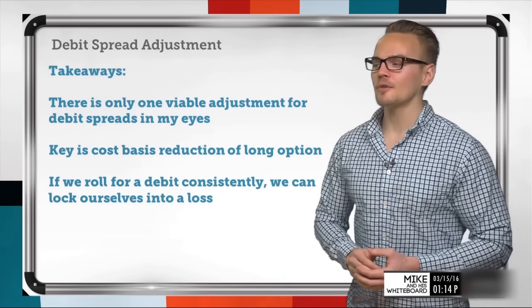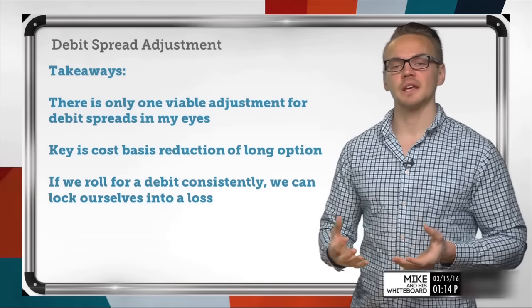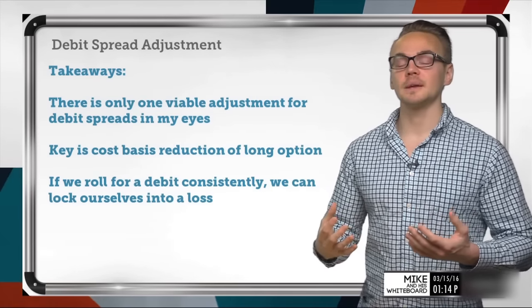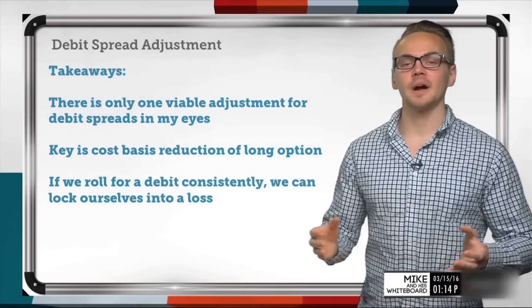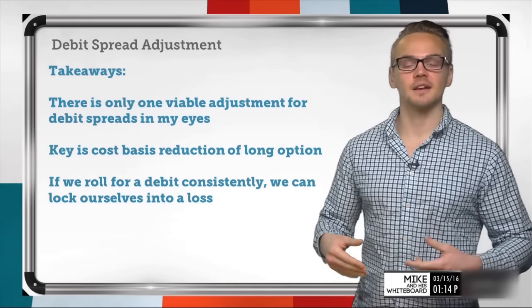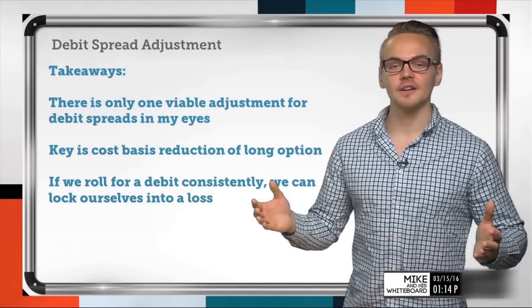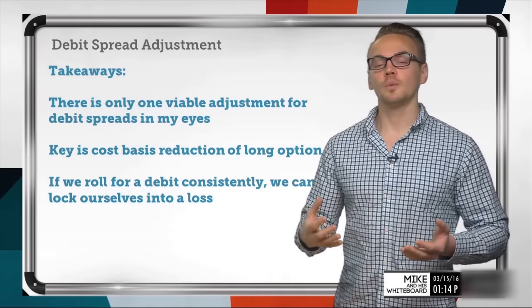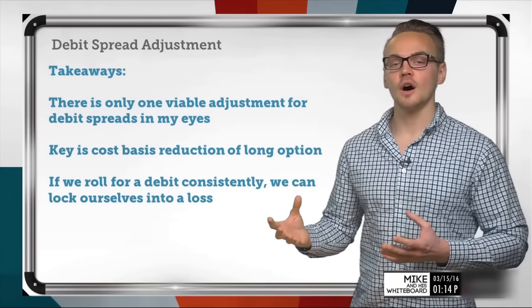Lastly, if we roll for a debit consistently, we can lock ourselves into a loss. This is a common question on the support channels: should I roll a debit spread for a debit? If we do that continually, we can actually lock in a loss. In the previous example with a 10-point wide spread bought for $4.90, if I keep rolling for $0.50 each time, eventually my cost basis could reach $10 on a 10-point wide spread — and at that point, I can't possibly make any money. When we roll, we really like to roll for credits, which is why you'll see us rolling credit spreads and naked options rather than long debit spreads.